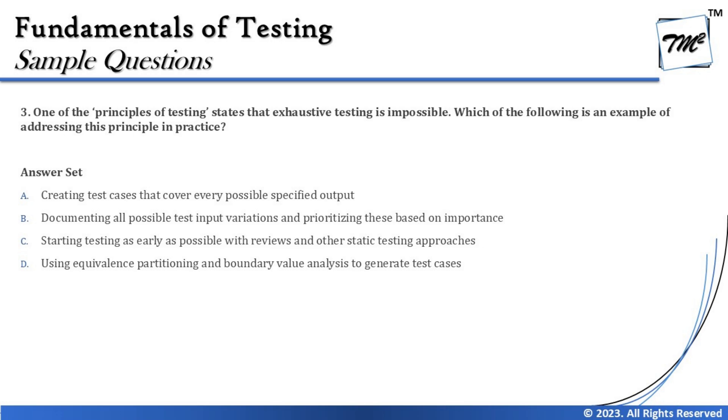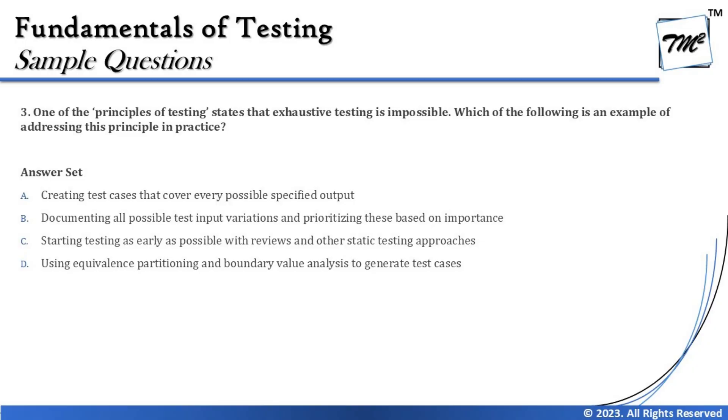Question three states: one of the principles of testing states that exhaustive testing is impossible. Which of the following is an example of addressing this principle in practice? There are seven standard testing principles, and each has a unique definition. A deep understanding of what each principle means and why it matters in testing is crucial to answering this question correctly. Let's go through the options.